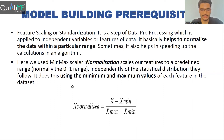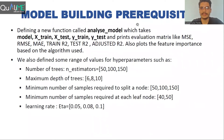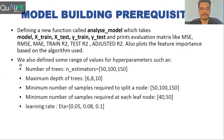We then did feature scaling, normalizing the data to the zero-to-one range using MinMaxScaler. As a prerequisite for model building, we created a function named AnalyzeModel that takes the model and the train-test splits of the data, and prints all evaluation metrics along with feature importance based on the algorithm used. We also predefined the range of hyperparameters to be used later for hyperparameter tuning in a grid search.